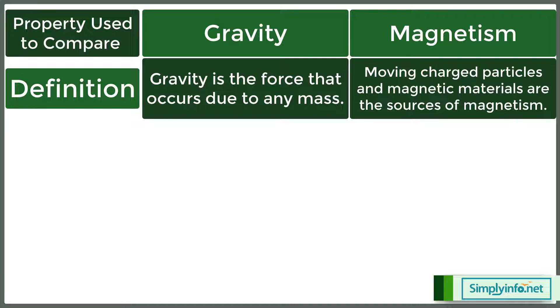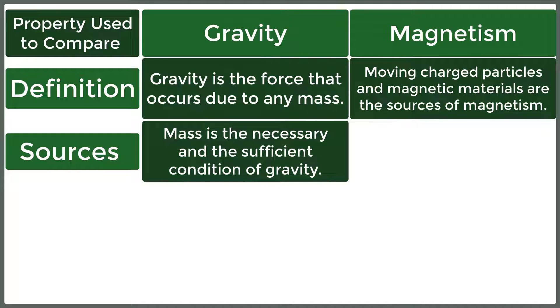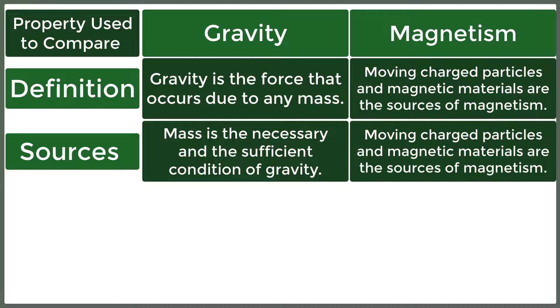Moving charged particles and magnetic materials are the sources of magnetism. Sources: Mass is a necessary and sufficient condition of gravity. Moving charged particles and magnetic materials are the sources of magnetism.